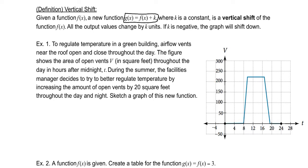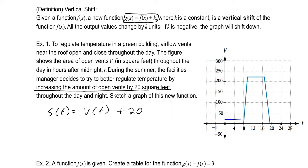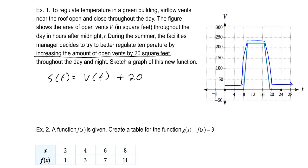Because we are altering the output value v, we write the summer function as s of t equals v of t plus 20. To sketch this graph, we estimate that 20 units is about here, so we're increasing upward by 20, drawing the curve parallel to the original. All of our output values — the v values — have increased by 20. They've shifted up.